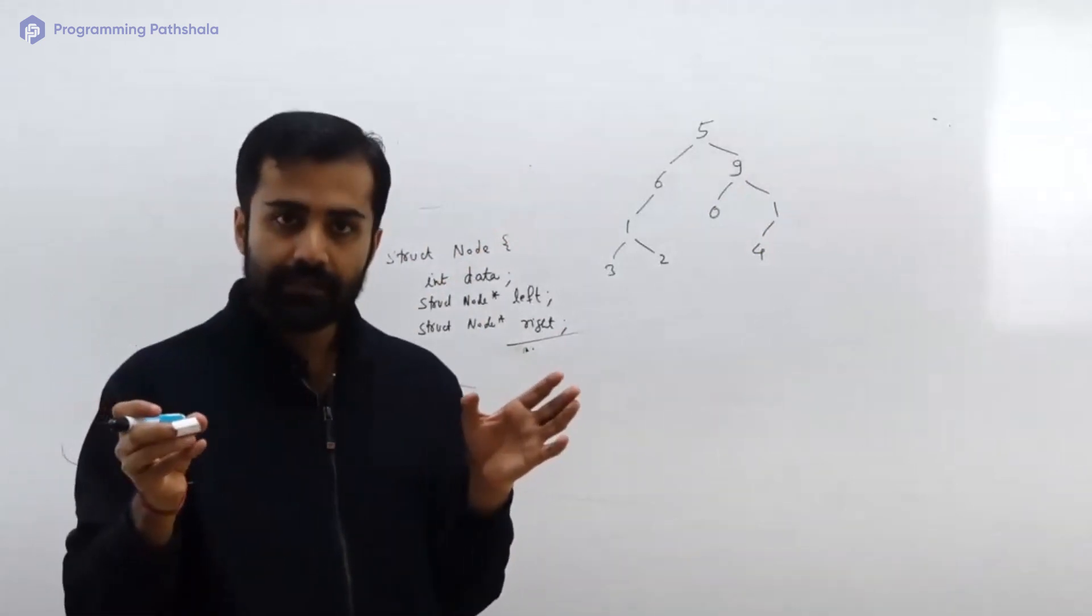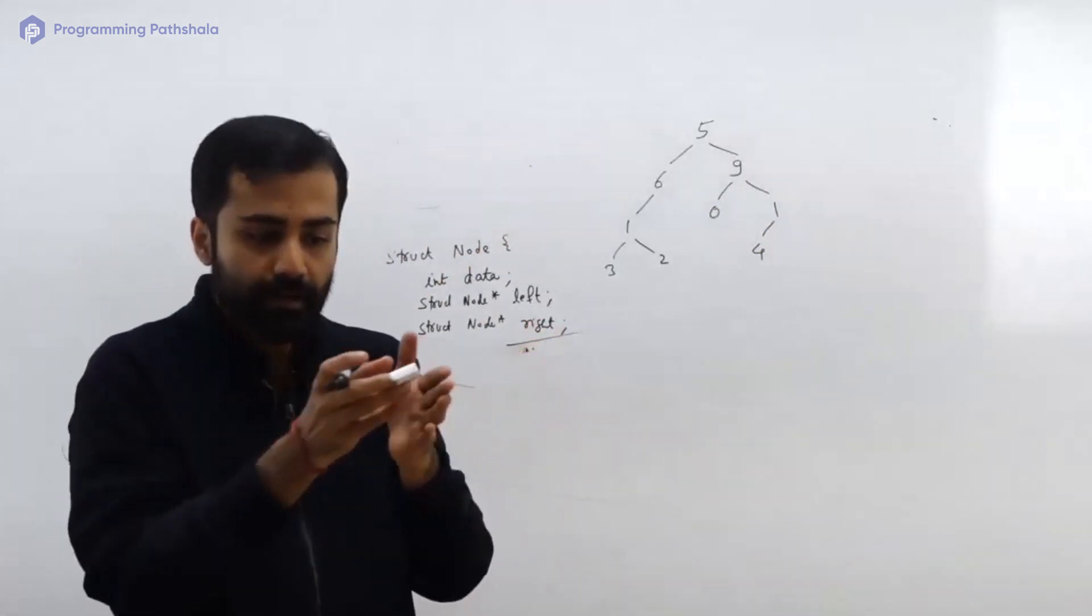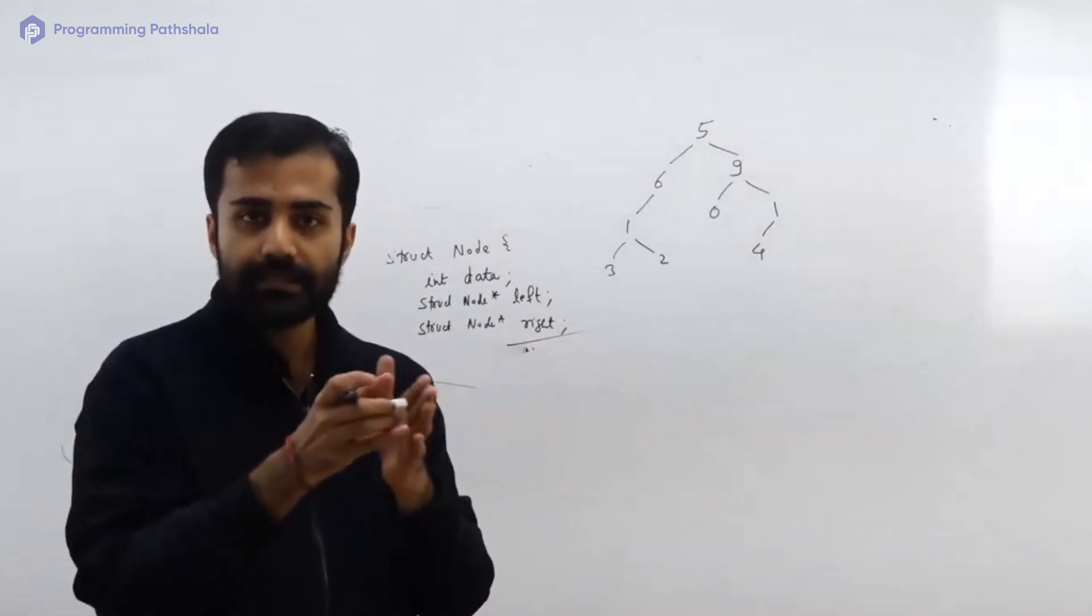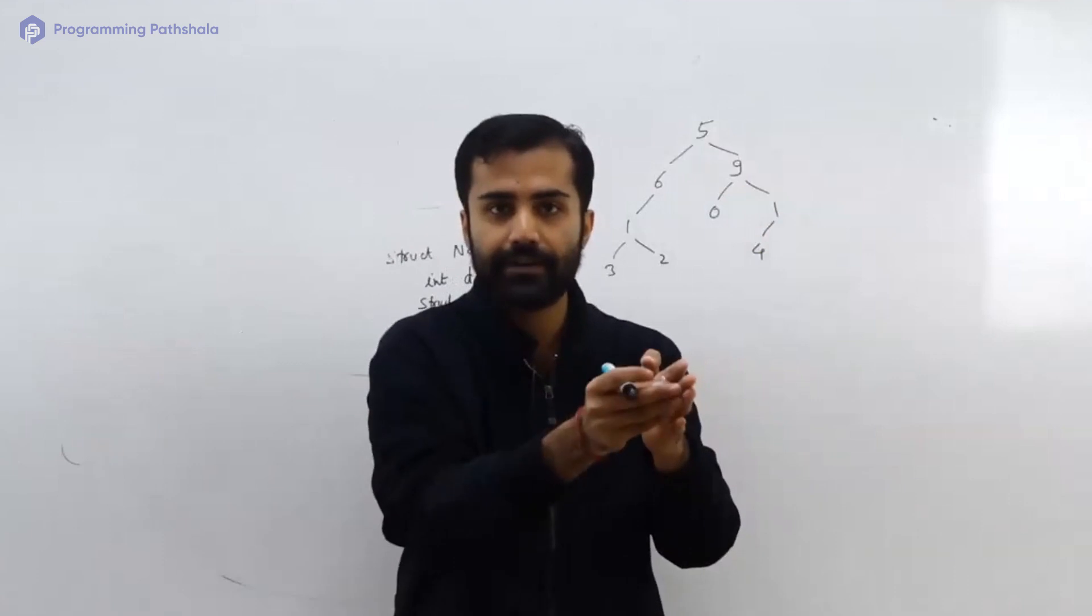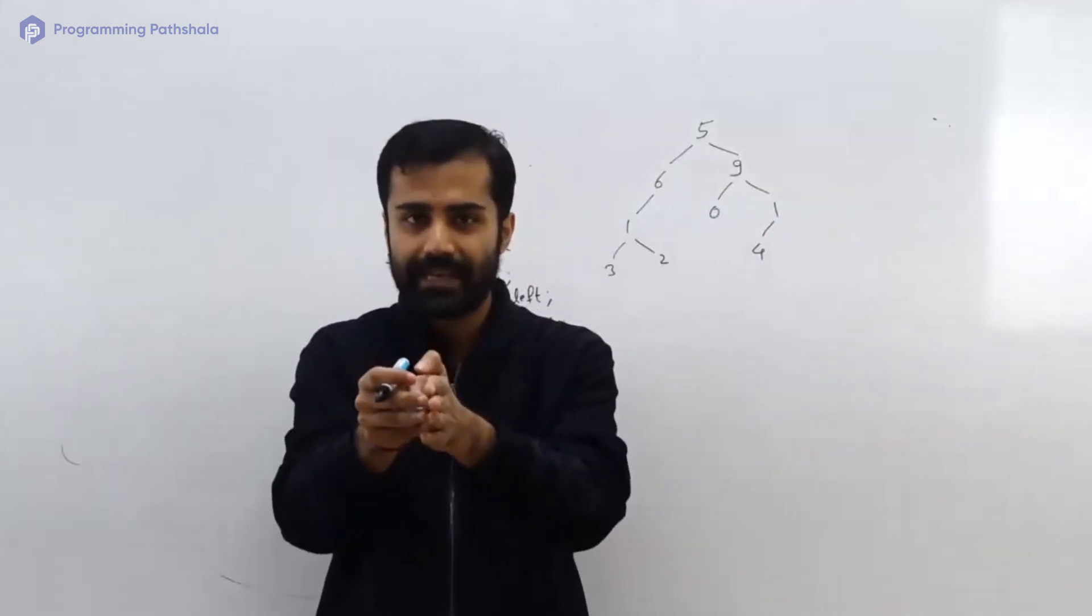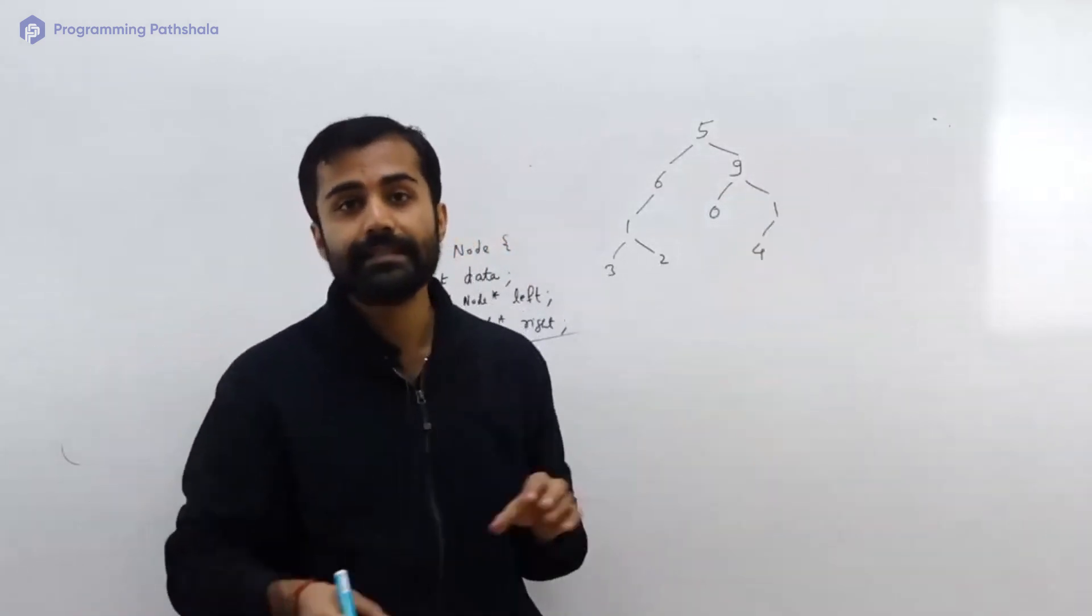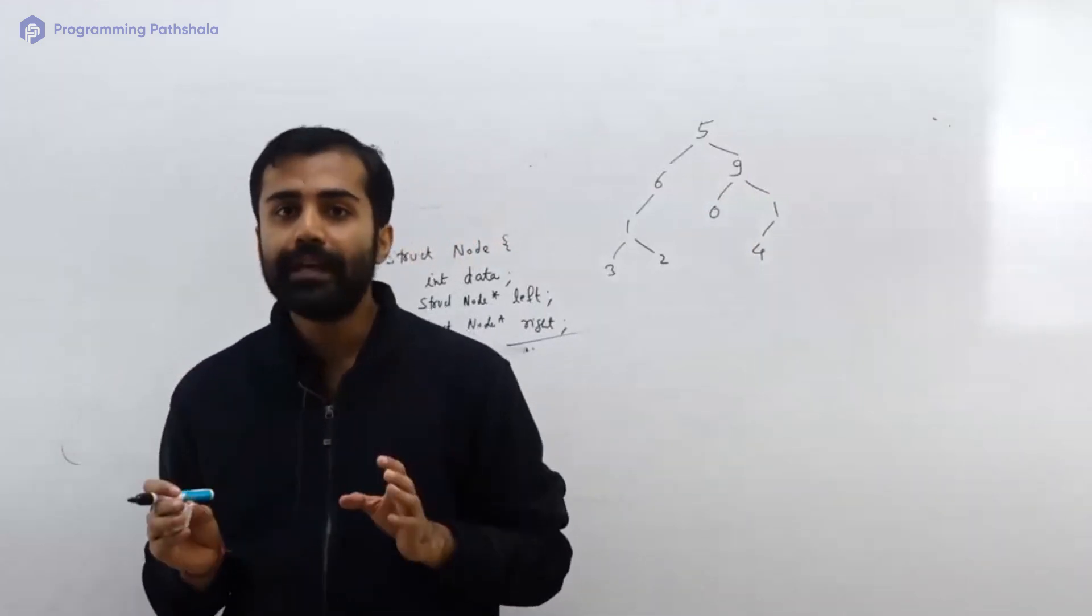You cannot do this question just by using a for loop or just by using a simple traversal in a linear data structure. In a linear data structure what happens? You can travel from i equals 0 to i equals 1 to i equals 2, but in this case that is not possible.